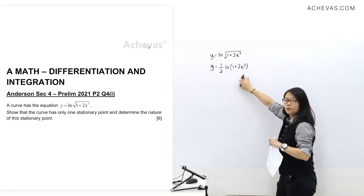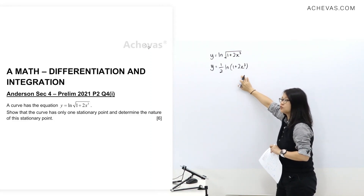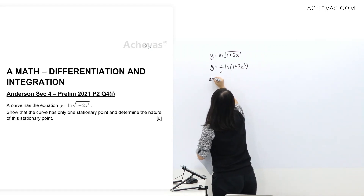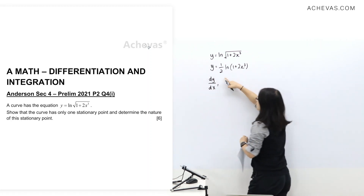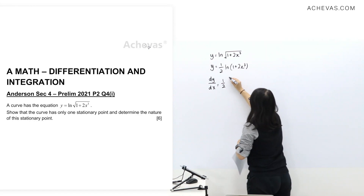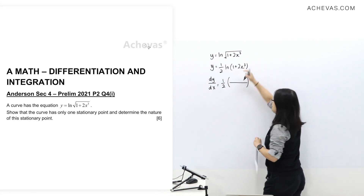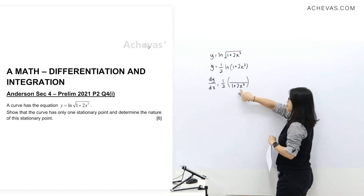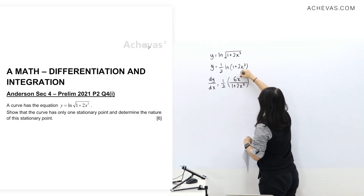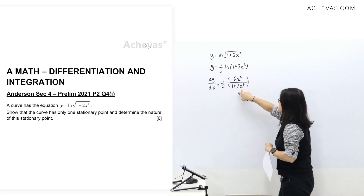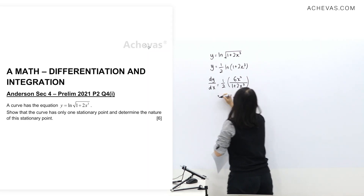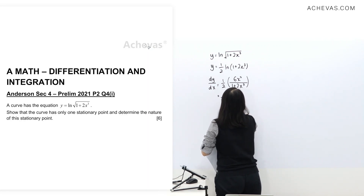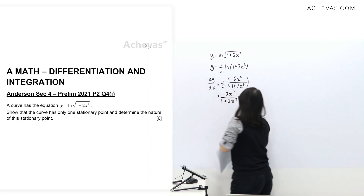So first step: we know that we need to find the stationary point, so we set dy/dx equals to 0. Differentiating ln, we copy the inner expression and differentiate it — that gives 6x squared on top. Let's simplify this.